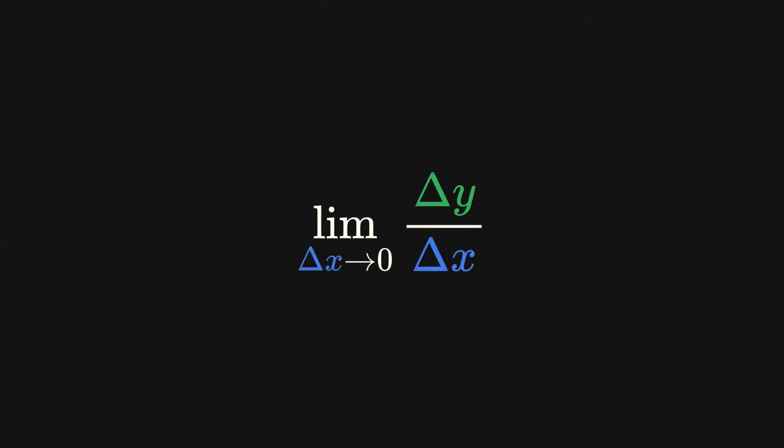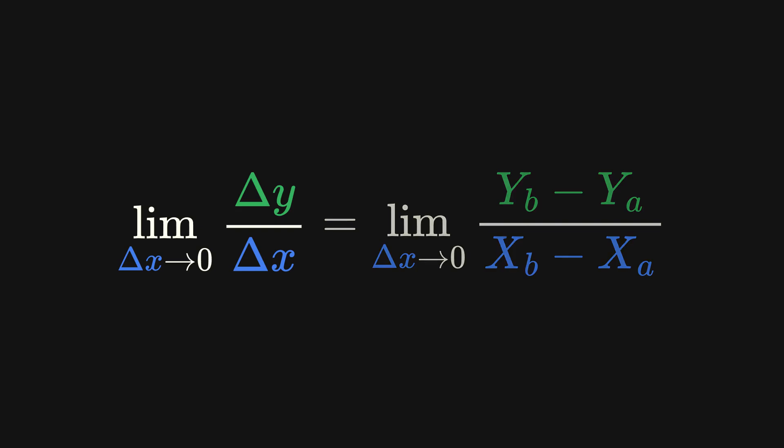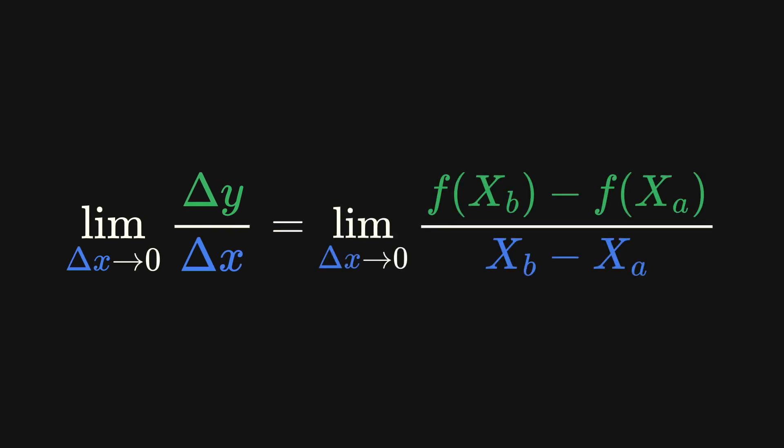We've been thinking of instantaneous rate of change as when the gap between the two points, delta x, approaches zero. We could rewrite this ratio by expanding the deltas and getting our y values from the function at x, like we did last time. We could also rewrite delta x approaching zero to be the x value of B approaching the x value of A.